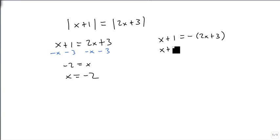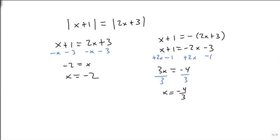For our other one, we first need to distribute the parentheses, and then we're going to add 2X to both sides and subtract 1. So 3X equals minus 4, divide by 3, and X equals minus 4 thirds. So here's our two points to check.